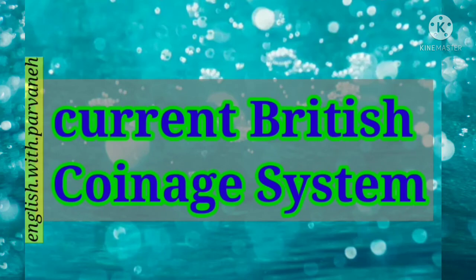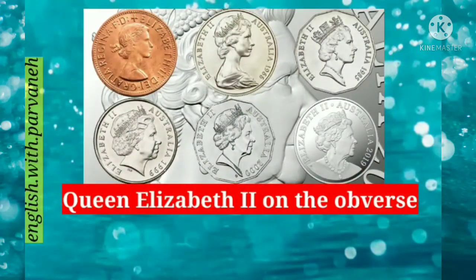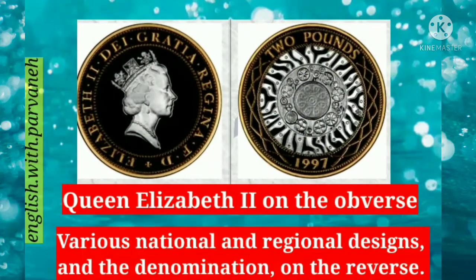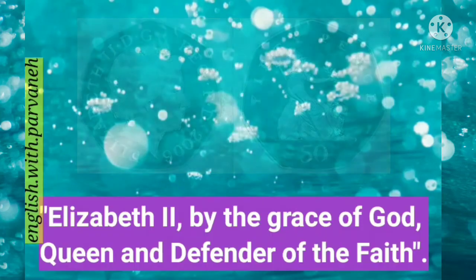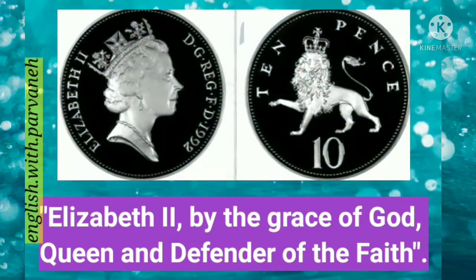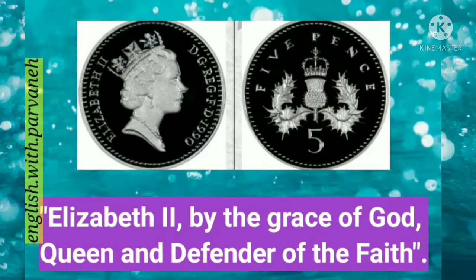Now coins. Current British coinage system: all circulating coins have an image of Queen Elizabeth II on the obverse or front side of the coin, and various national and regional designs and the denomination on the reverse. All current coins carry an abbreviated Latin inscription which translates to: 'Elizabeth II, by the grace of God, Queen and Defender of the Faith.'